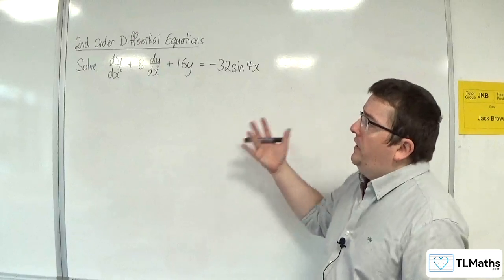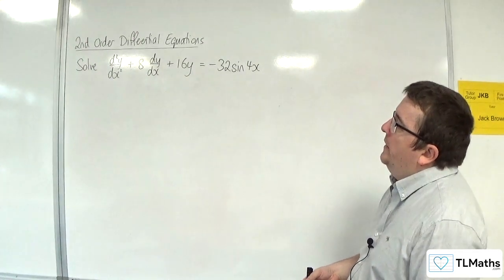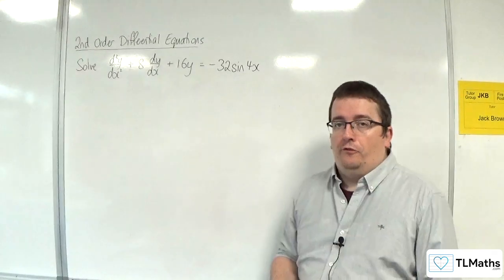In this video I'm going to solve d²y/dx² + 8dy/dx + 16y = -32sin(4x).